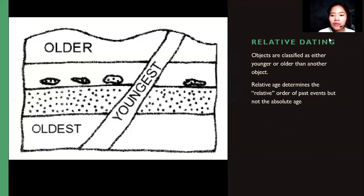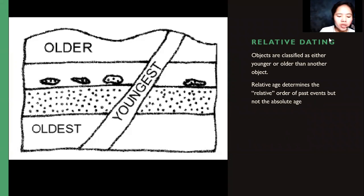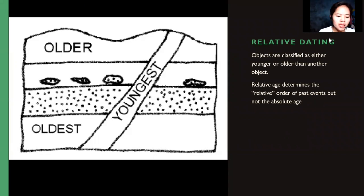Relative dating classifies objects as either younger or older than another object. It is used to determine the order of past events but not the absolute age — it only estimates which is oldest and which is youngest without giving the exact time or age. Strata of sedimentary rock are very important in determining relative age.